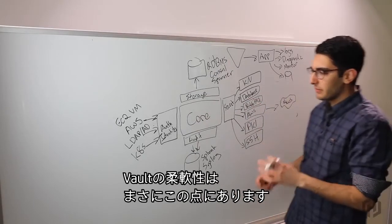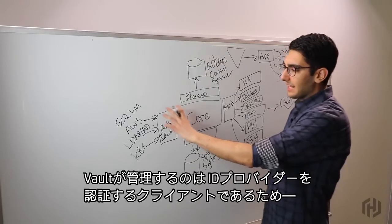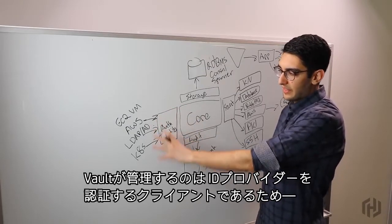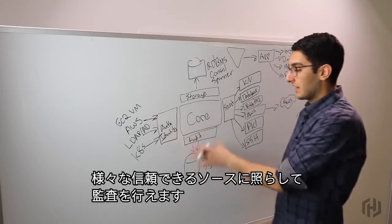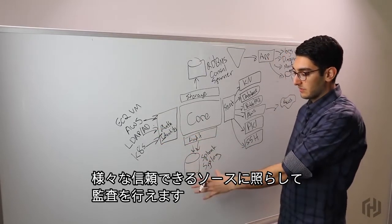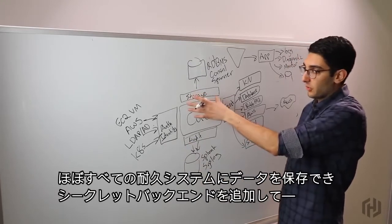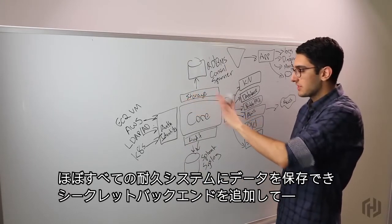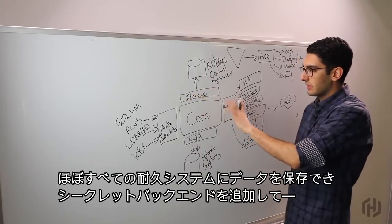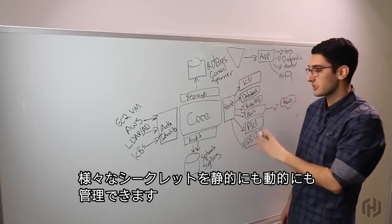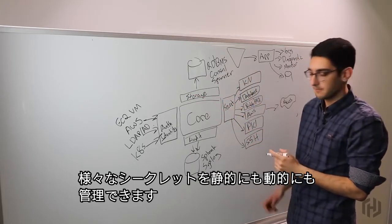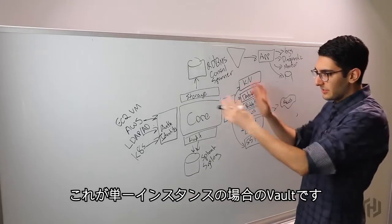At its core, this is what makes Vault so flexible. It allows Vault to manage clients that are authenticating against a different set of identity providers. We can audit against a variety of different trusted sources of log management. We can store data in almost any durable system. And then we can extend the surface area of what types of secrets can be either statically or dynamically managed by adding new secret backends. So this becomes Vault in a single instance nutshell.